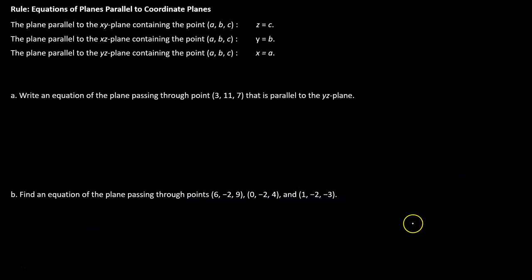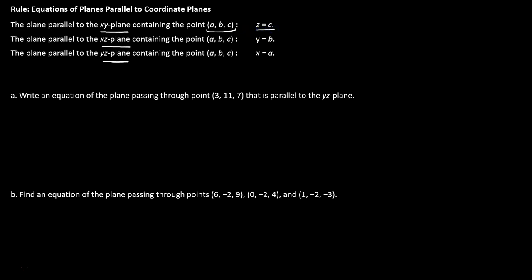We've talked about coordinate planes — the xy plane, the xz plane, and the yz plane — and the equations that pair with those. Now we're going to talk about planes that are parallel to those coordinate planes. The xy plane is z equals 0, the xz plane is y equals 0, and the yz plane is x equals 0. Any plane parallel to the xy plane that contains a given point (a, b, c) must have the equation z equals c. Let's take a moment to digest that.